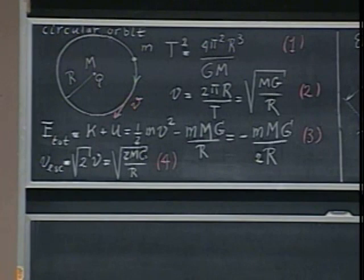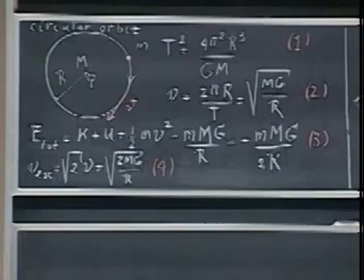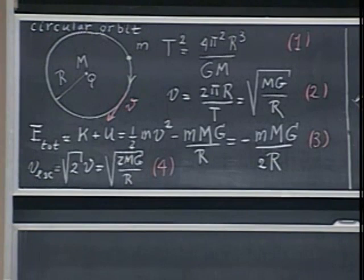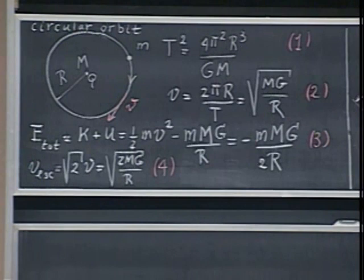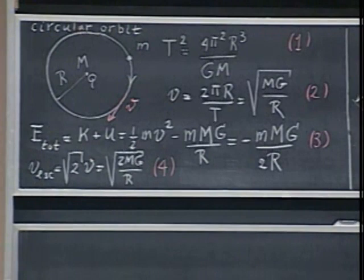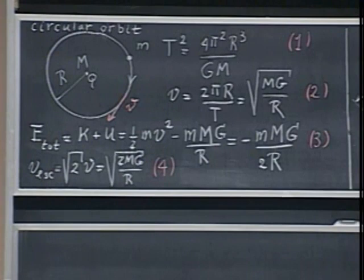You see there the kinetic energy term, which is one-half mv squared, and then the potential energy term. We have defined potential energy to be zero at infinity, and that is why all bound orbits have negative total energy. If the total energy is positive, the orbit is not bound. When you add these two up, you get a very simple answer. The escape velocity is found by setting total energy to zero, and out pops the speed to escape the gravitational pull of capital M, which is square root of two times larger than the orbital speed v.